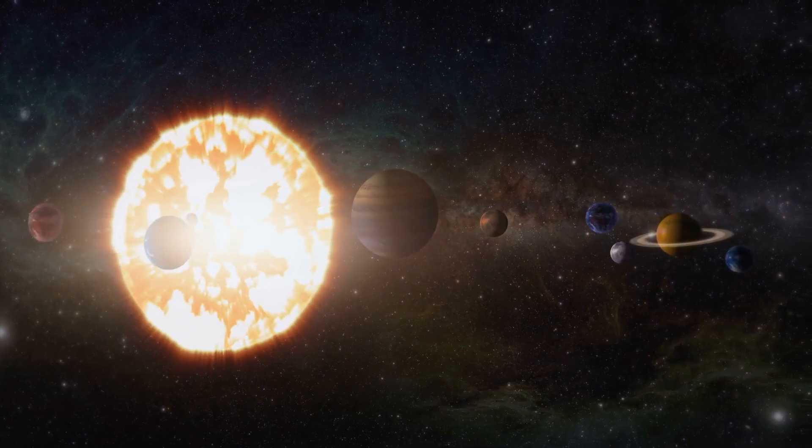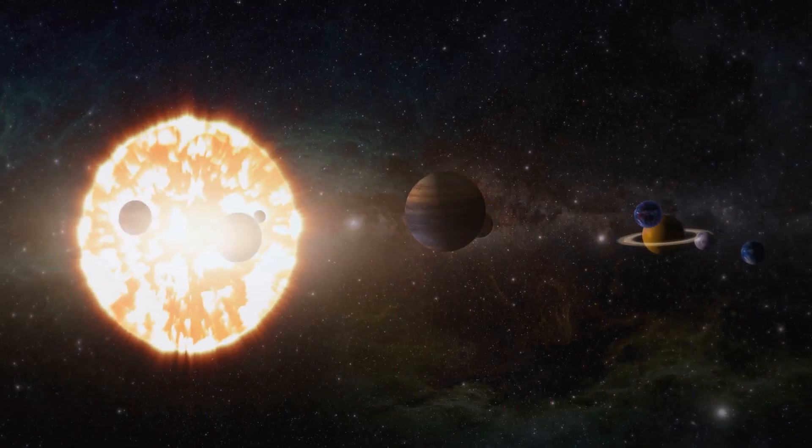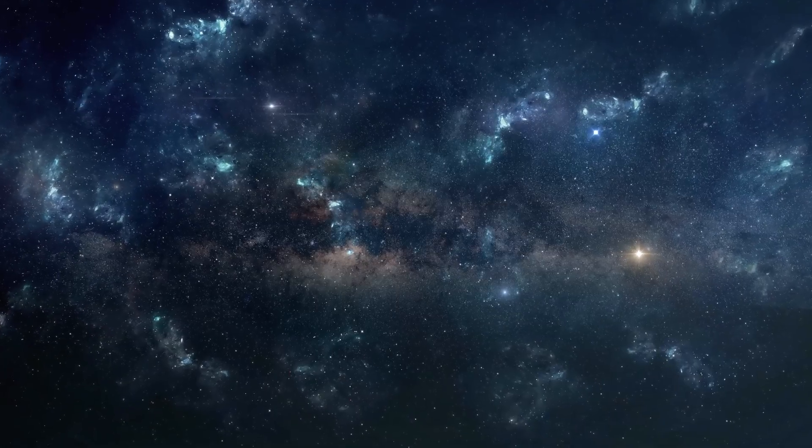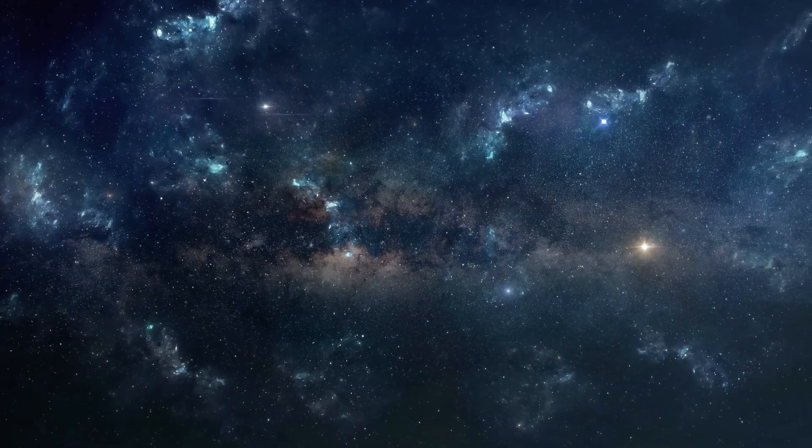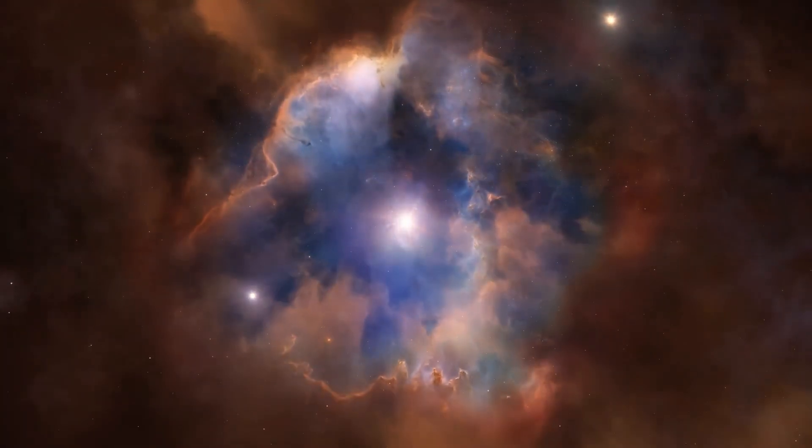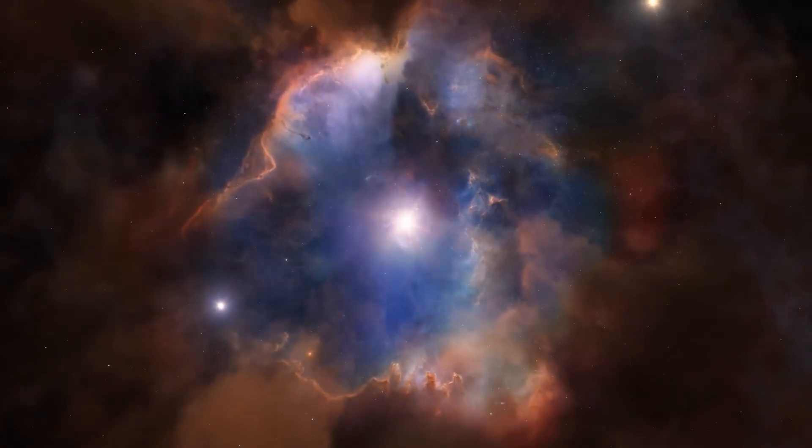What we're learning is that our solar system isn't an isolated island in space. It's part of an incredibly complex, dynamic, cosmic ecosystem. The structures above and below us influence everything from the shape of our heliosphere to the flow of cosmic rays that can affect our climate and technology.